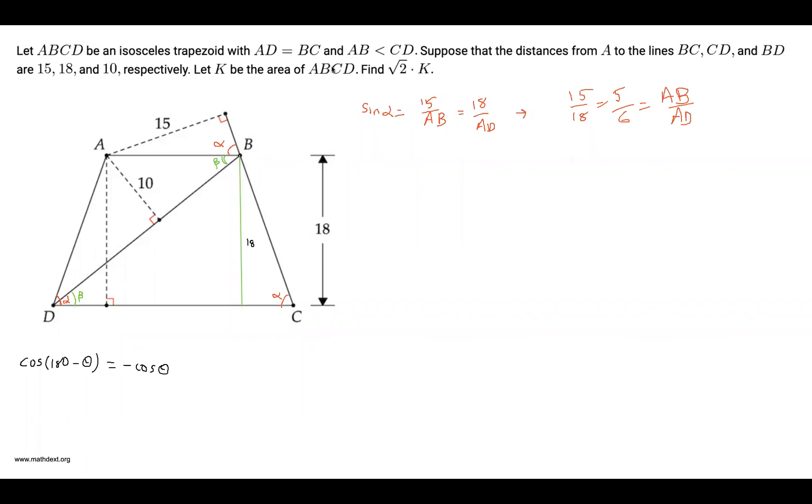Now, sine of beta equals, from this triangle over here, it's 10 over BD. And from this triangle over here, this big one, it's going to be 18 over BD.